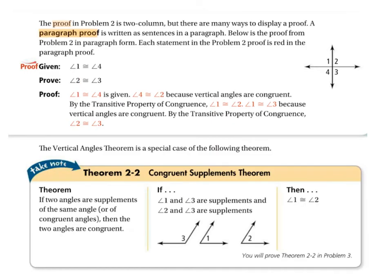The proof in problem two is a two-column proof — the two columns are the statements and the reasons why you can make those statements. There are many ways to display a proof, including a paragraph proof. A paragraph proof is just another way of writing the same information, but we'll stick with two-column proofs because they're neat and clear. Here's the proof from problem two written in paragraph form.